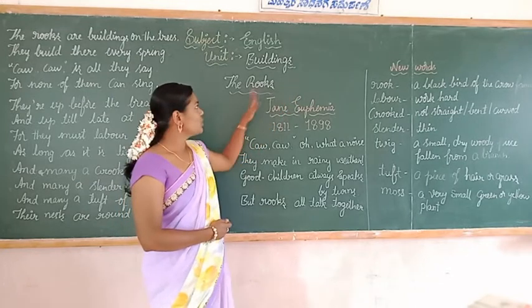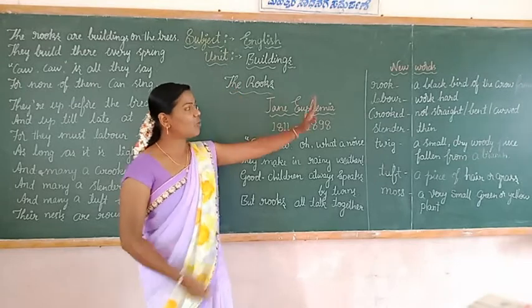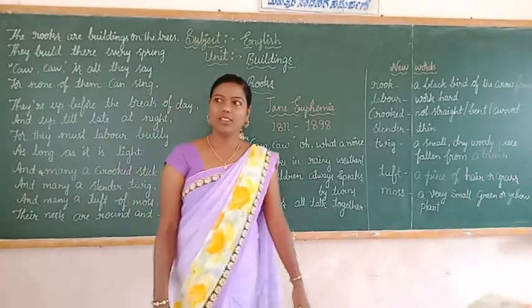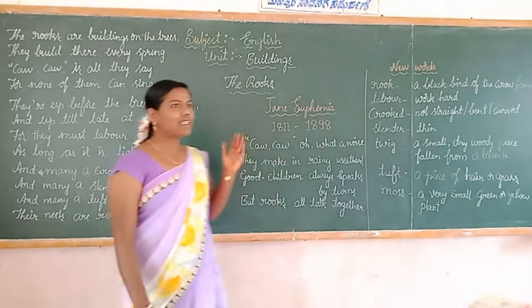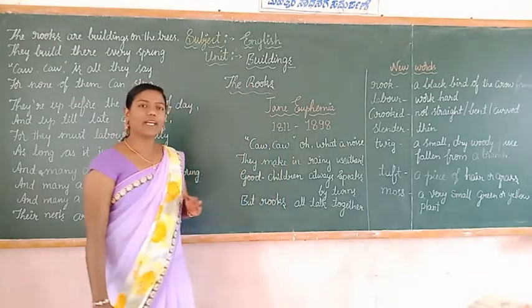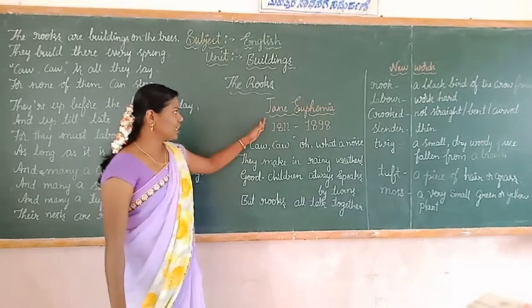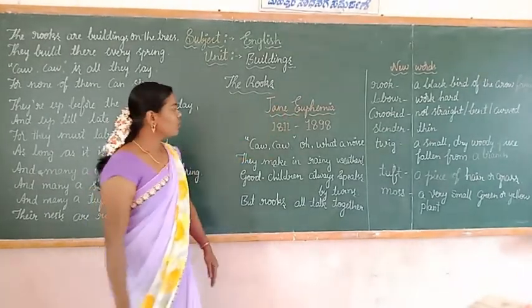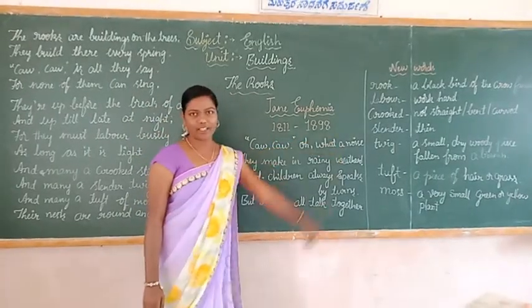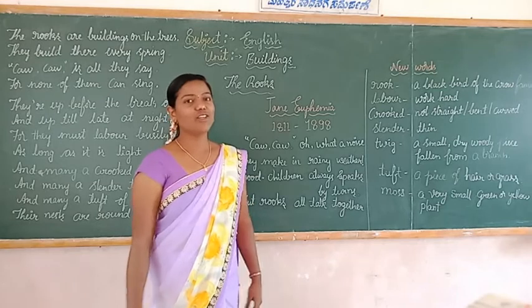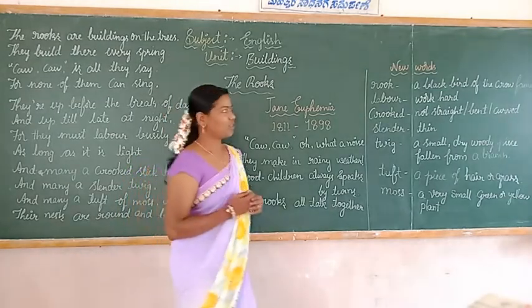Okay, so the poem is called 'Rooks.' It is a poem about a black bird belonging to the crow family. This lesson was written by a great English poet. His name was Jane Euphemia. He was born in 1811 and he died in 1898. So first I will introduce the new words from this poem.